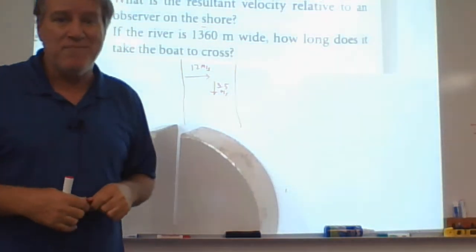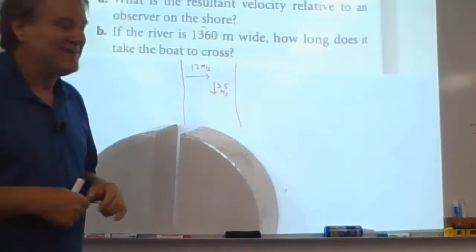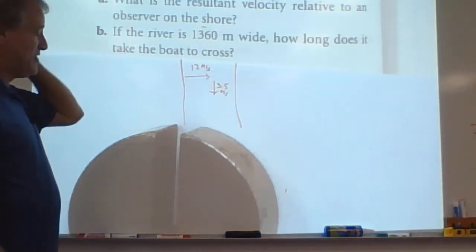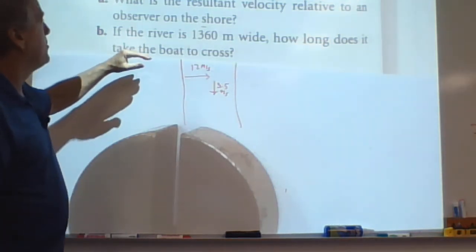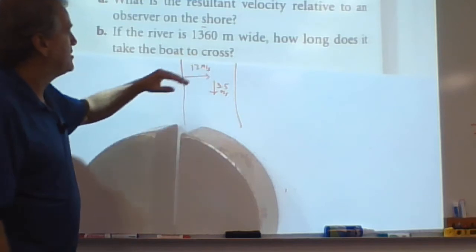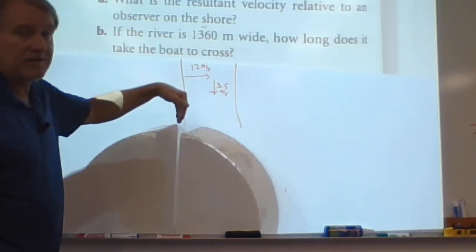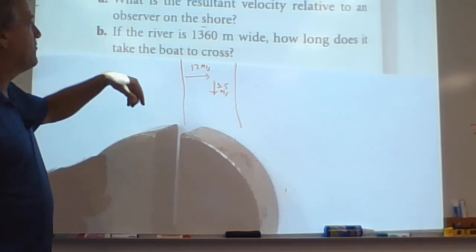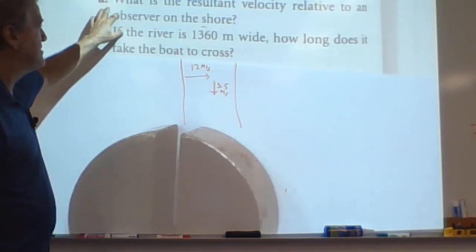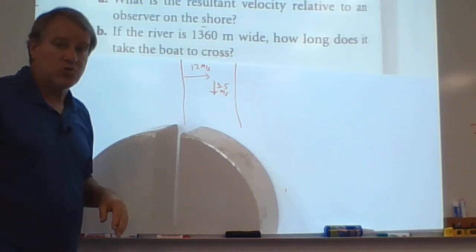All right, this is part four of your book homework. It's getting long already. This is number 52. It says a motorboat travels due east across a river at 12 meters per second. The flow is going south, perpendicular to it, at a speed of 3.5. And the question A is, what is the resultant velocity relative to an observer on shore?